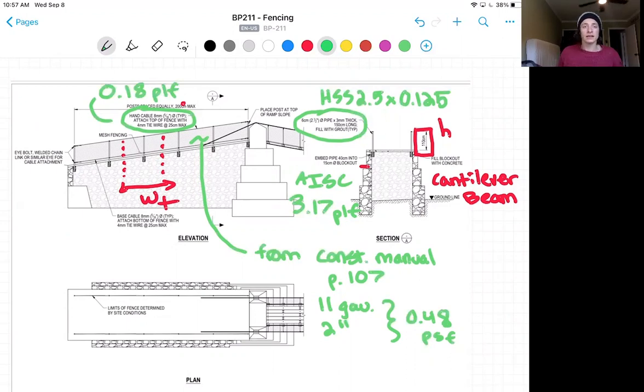And finally, our hand cable. We'll ignore the weight of the small tie wires, but our hand cable is a 5 sixteenths diameter cable that we can use the website I've attached below to find an approximate load of 0.18 pounds per linear foot.